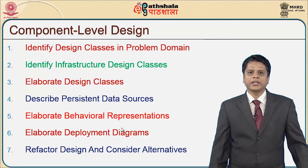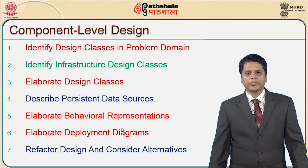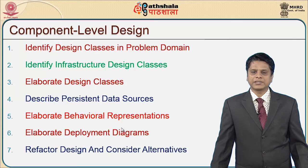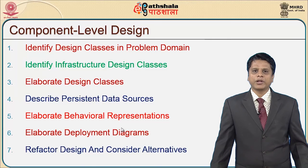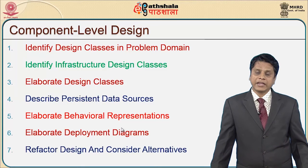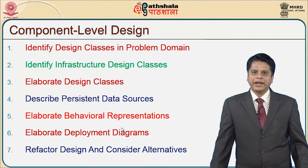Now it is time to look at the various steps in component level design. These are the principles to be followed: identify design classes in the problem domain; identify infrastructure design classes; elaborate design classes; describe persistent data sources; elaborate behavioral representations; elaborate deployment diagrams; and refactor the design and consider alternatives. We will give a closer look at the higher-level abstractions along with behavioral representations, deployment diagrams, and reusability design considerations.